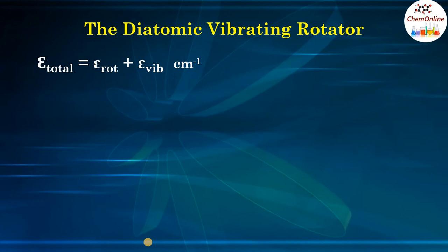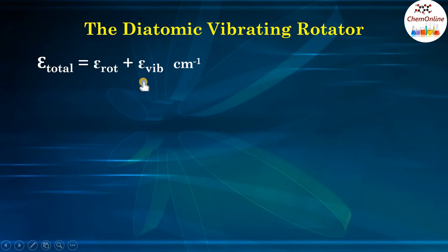According to the Born-Oppenheimer approximation, rotations and vibrations are independent of each other. So excluding electronic energy, we can write the total energy: epsilon total equals epsilon rotational plus epsilon vibrational, that is rotational energy plus vibrational energy, and this is in centimeter inverse.